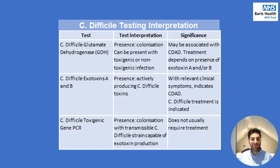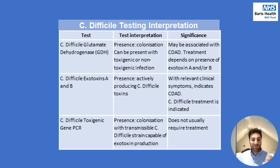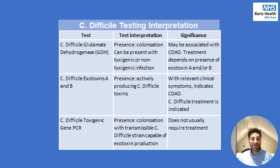The next test is for C. difficile exotoxins A and B. The presence of either or both of these exotoxins indicates actively producing C. difficile toxins, which means they have active disease requiring treatment if they have relevant symptoms. The third test is C. difficile toxigenic gene PCR. If this is positive, it shows that the patient is not only colonised with C. difficile but with a transmissible strain capable of exotoxin production. If they are asymptomatic, this does not usually require treatment, though clinical correlation is advised and we should treat every patient on their own merits.